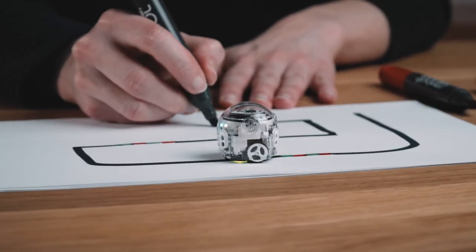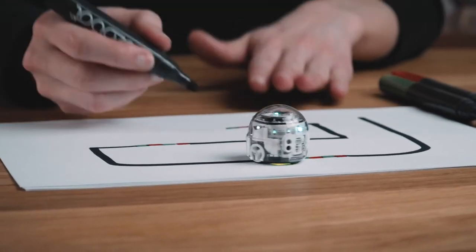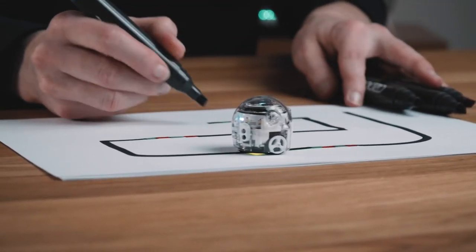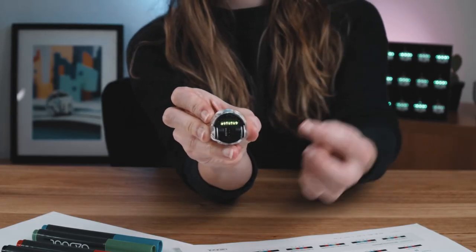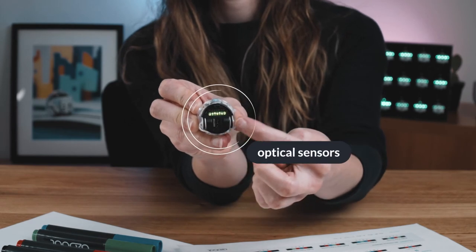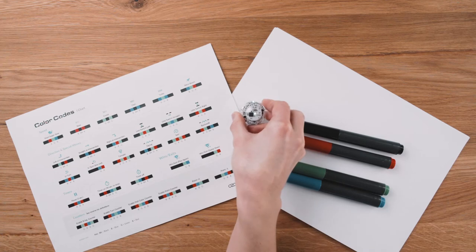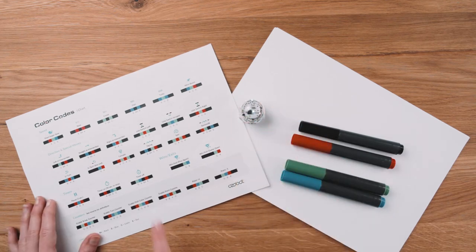You may be wondering, but how does EVO know what I'm telling it to do? Is it magic? It's not magic. The optical sensors on the bottom of your bot tell it where lines are so it can follow them and what colors it's seen so it can respond to your color code commands.